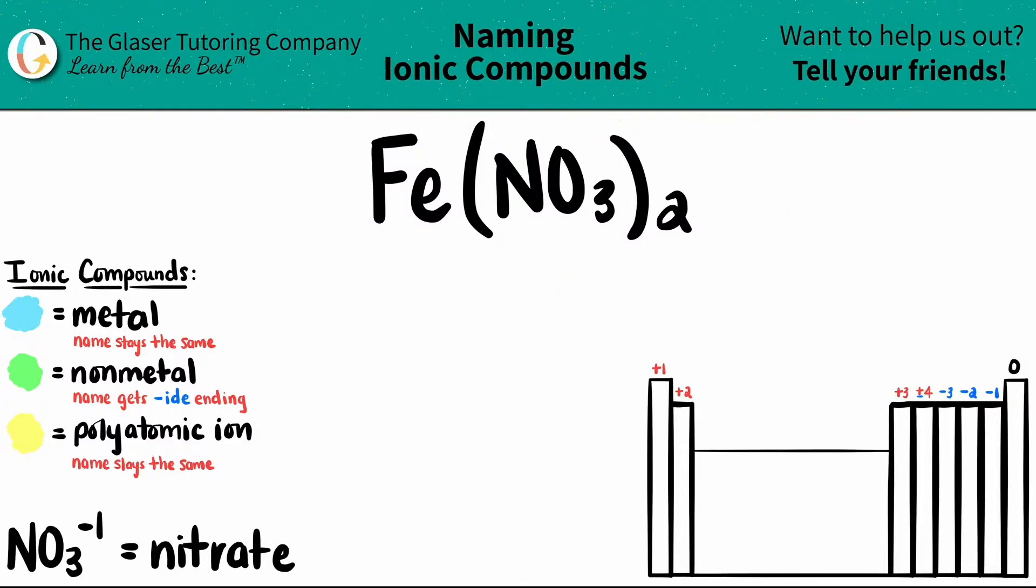In this case, we have three elements: iron, nitrogen, and oxygen. So we have to identify the polyatomic first, that's the easiest thing, and then we can fill in the other blanks.